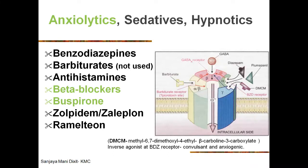Looking at a reference chart, the topic covers anxiolytics, sedatives, and hypnotics — these terms are very closely related. In this group of drugs there are benzodiazepines, barbiturates, and antihistamines, though barbiturates are not commonly used as sedatives and hypnotics anymore. Anxiolytics include beta blockers and buspirone. There are also the Z-drugs — zolpidem and zaleplon — and a melatonin agonist called ramelteon.